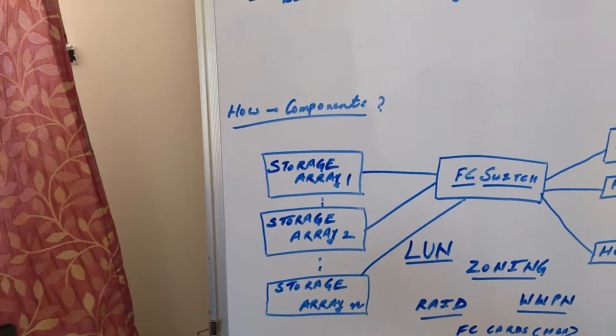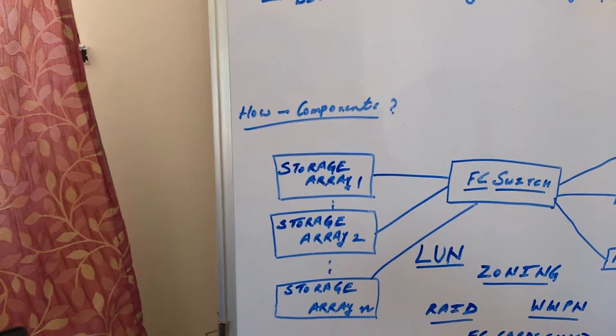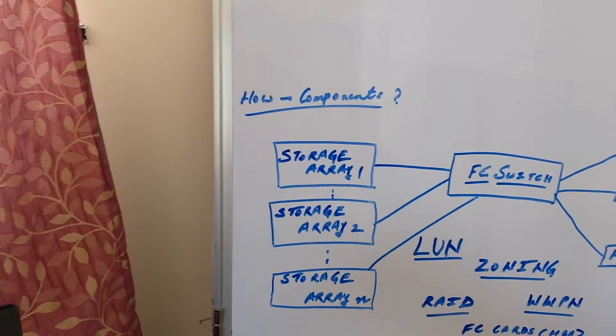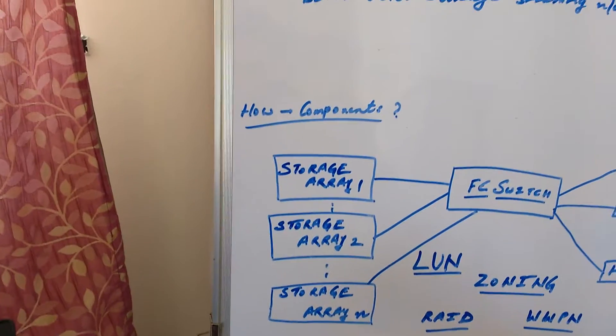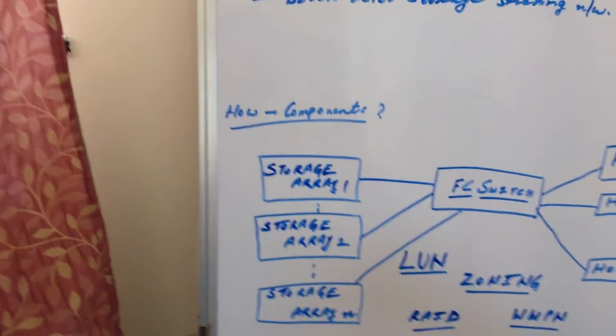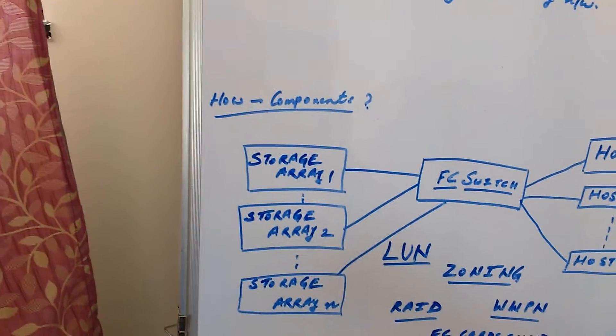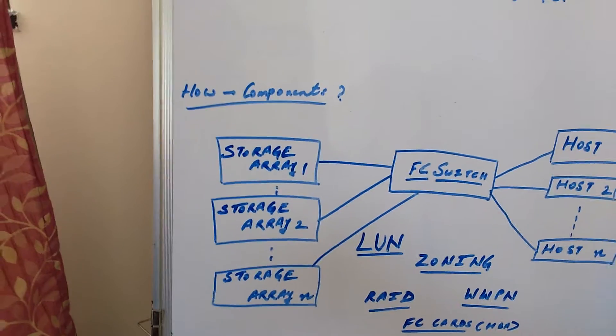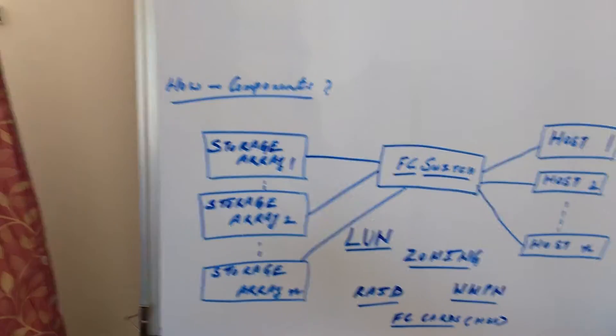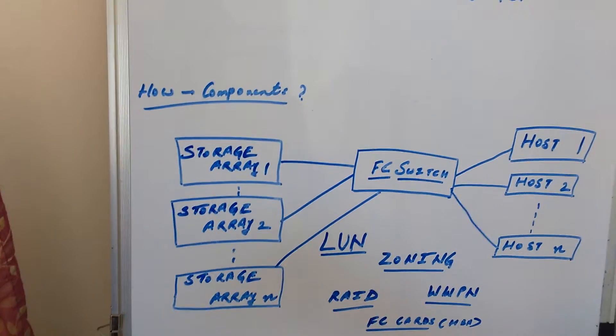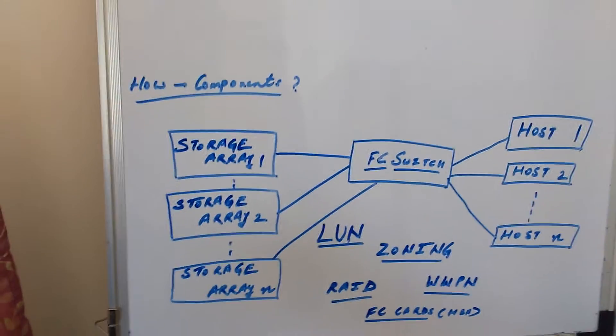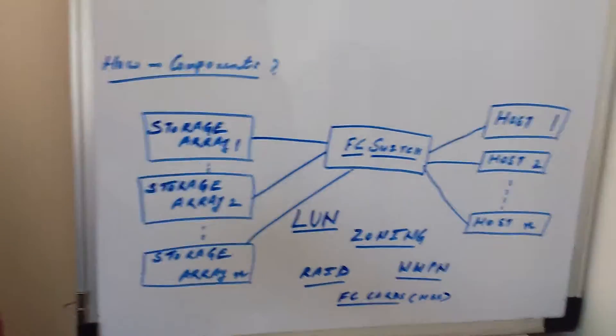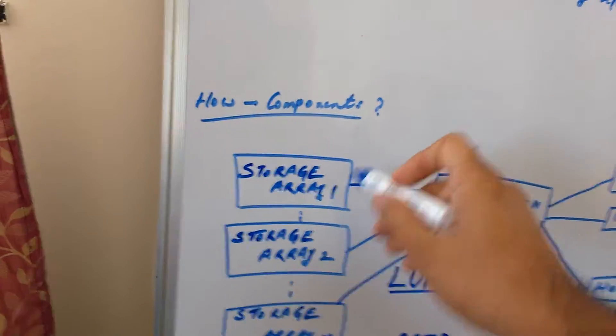We call them HDDs. These drives provide improved data protection with storage controller features—software that provides the storage array RAID functionality as well as multiple other enhancement features. These RAID and other storage controller features, we will discuss in detail in further videos. So let's talk about the basic components of the SAN. The first one is the storage array that we talked about just now.